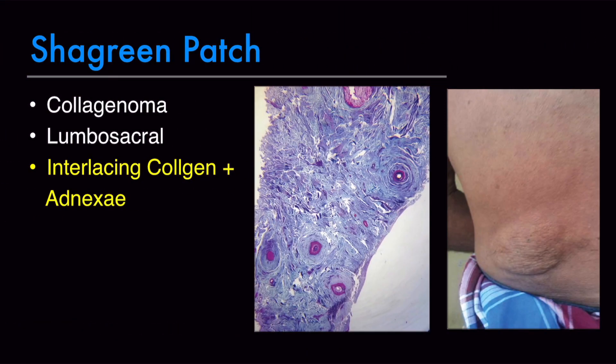The shagreen patch is basically a collagenoma, usually present in the lumbosacral region. On histology, we see dense collagen with thick collagen bundles and very few adnexal structures. There is loss of elastin and no inflammatory infiltrate. These are all the findings of the shagreen patch or collagenoma.